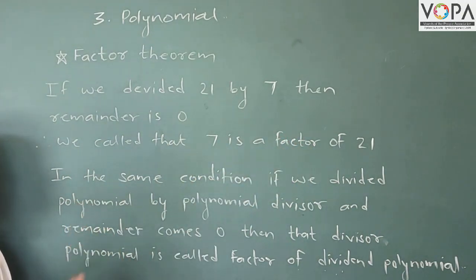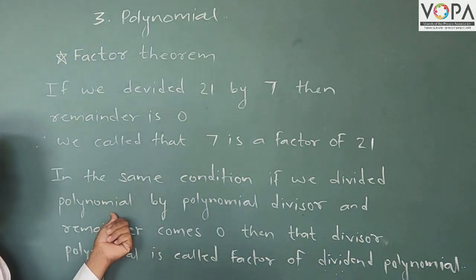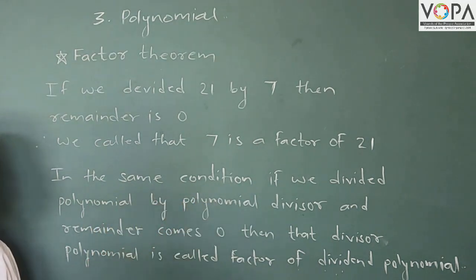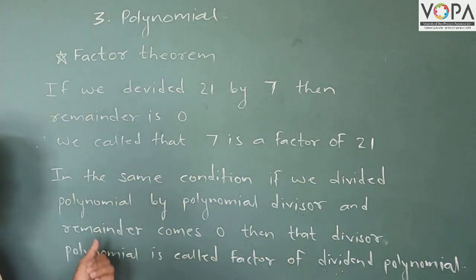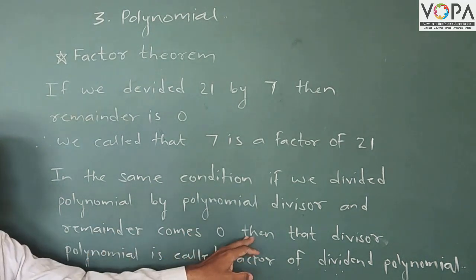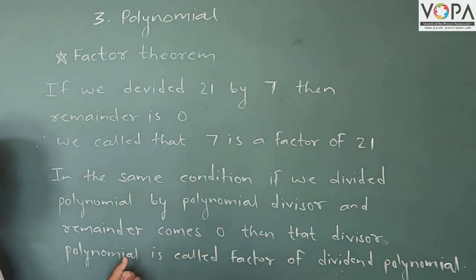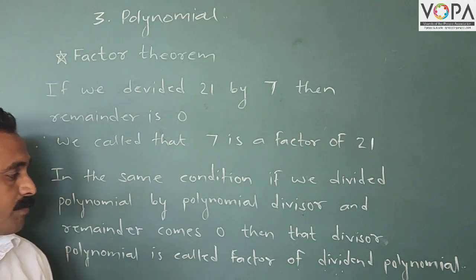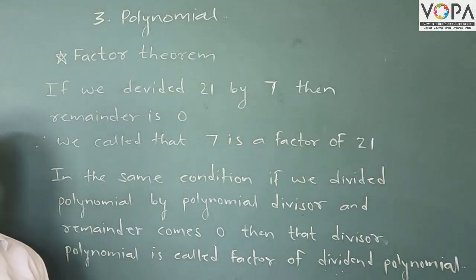Now, in the same way, if we divide a polynomial by a divisor polynomial and the remainder comes to 0, then that divisor polynomial is called a factor of the dividend polynomial.